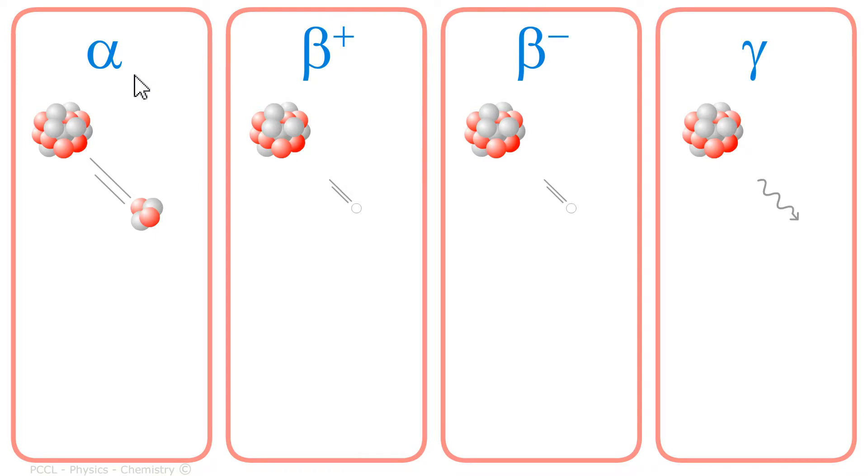What happens in the case of alpha decay? It is a nucleus that has too many nucleons. It will get rid of 4 nucleons at the same time: 2 neutrons and 2 protons. This is an alpha particle which is nothing other than the helium nucleus.